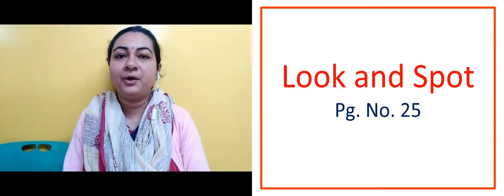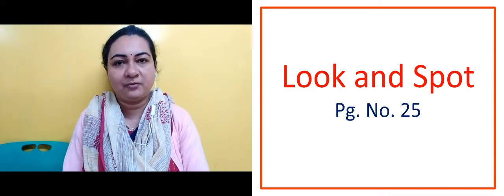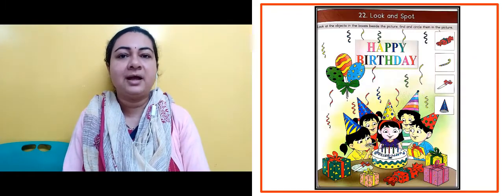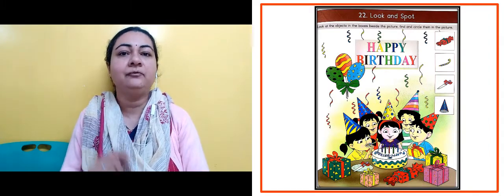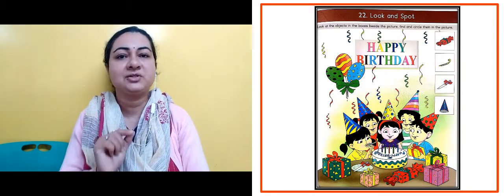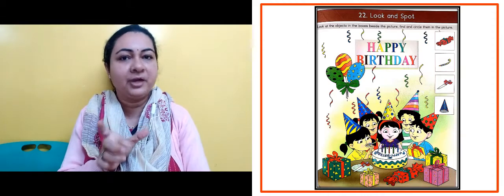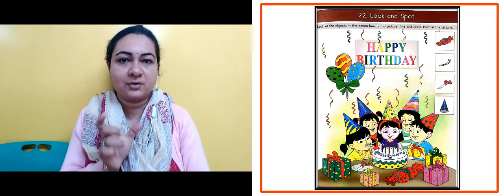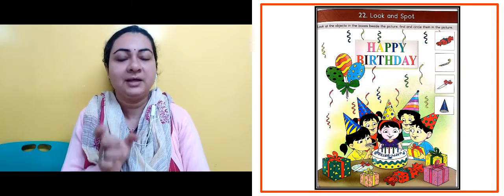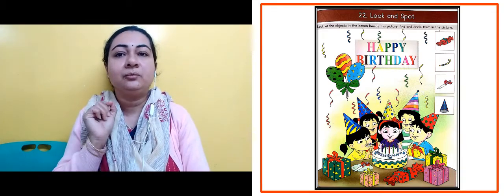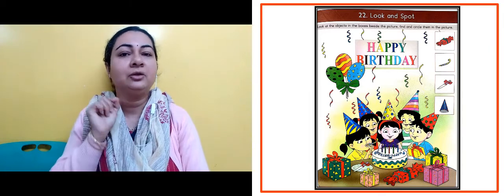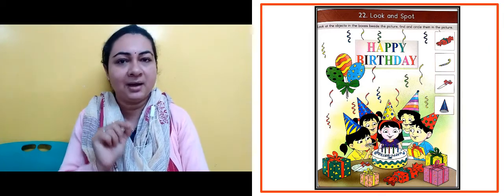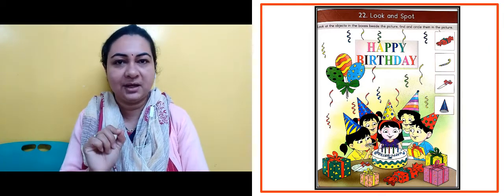Now the next slide is showing us 'Look and Spot' that is on page number 25. As you can see, a thudha box is given — for example, the first box has a gift box, and written on it is 'Happy Birthday'. You can see a birthday party.